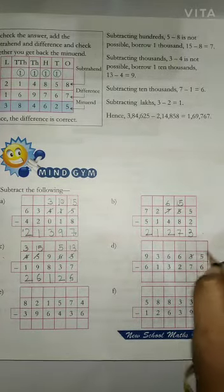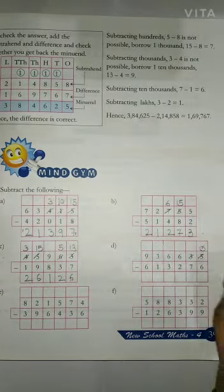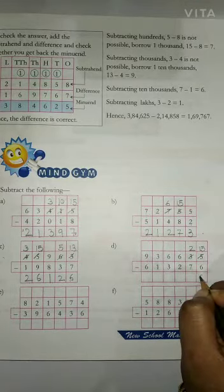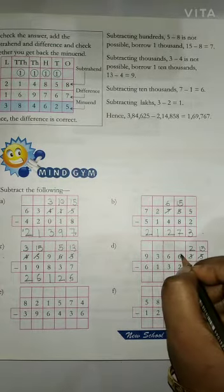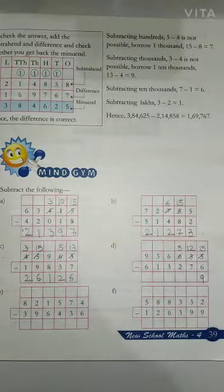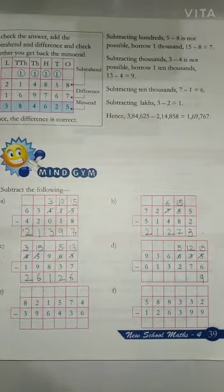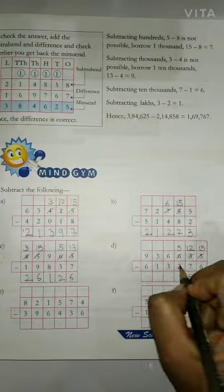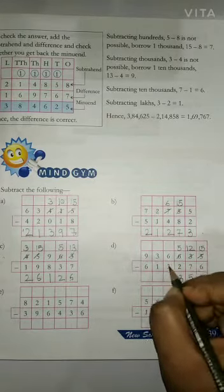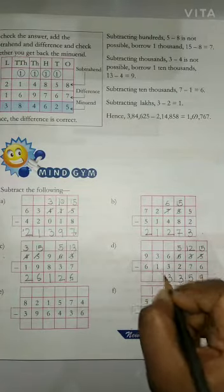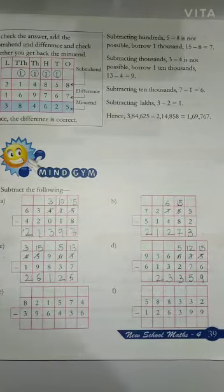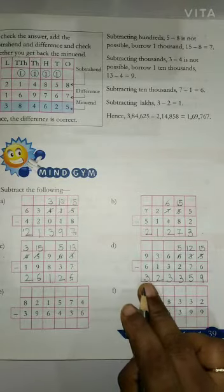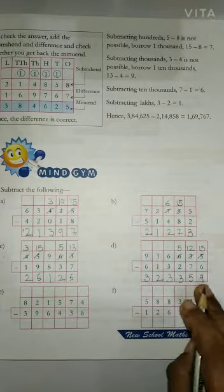Question D: 5 minus 6 — it is not possible, so we will take 1 borrow from the 10th place. 15 minus 6 gives us 9. 2 में से 7 minus नहीं होता, तो 100th place से 1 को borrow किया, 12 में से 7 minus किया, आजाएगा 5. Then 5 minus 2 gives us 3. 6 minus 3 gives us 3. 3 minus 1 gives us 2, and 9 minus 6 gives us 3. So we will get 33,23,359 as the difference.